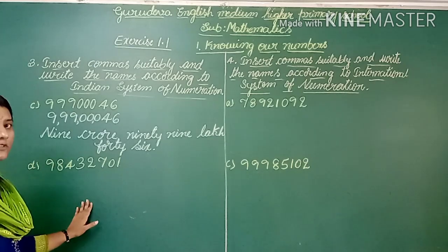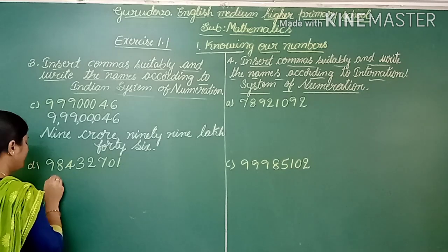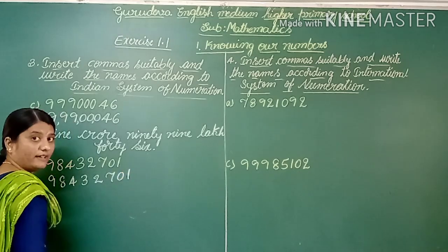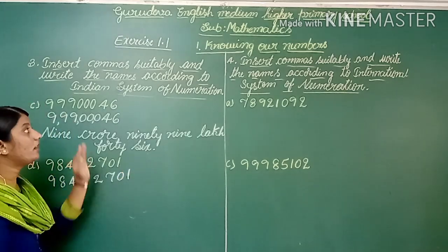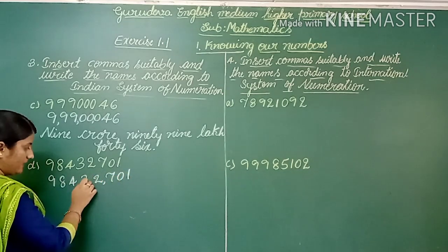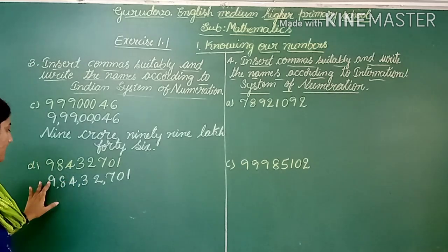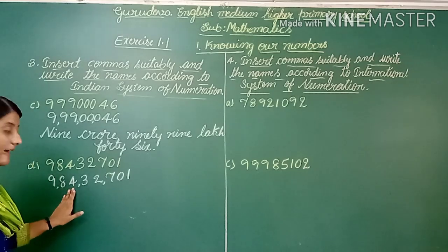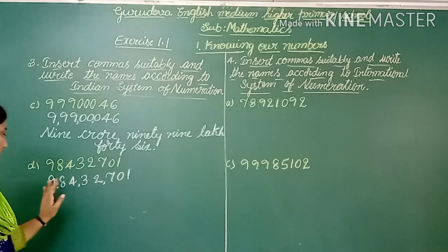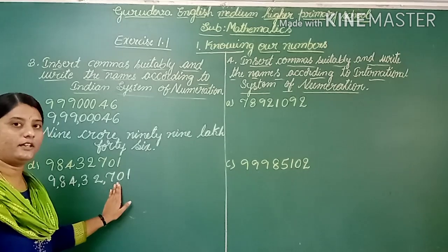Fourth number: 9,84,32,701. Write the digits as given and place commas according to the Indian system of numeration: 9,84,32,701. The number name is read accordingly.